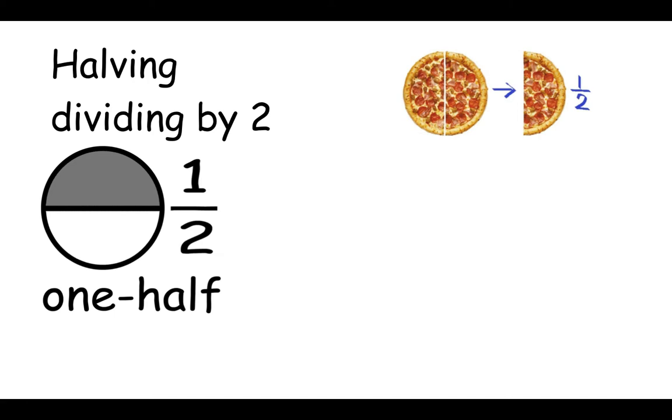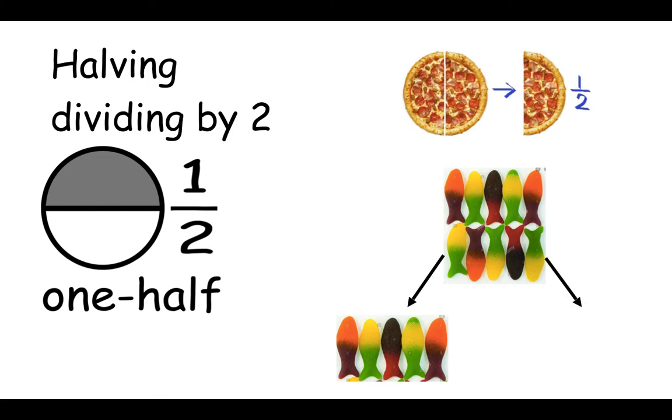We can also halve numbers and amounts. Here on the screen are ten sweets. If I wanted to halve these ten sweets, I would need to divide it by two, or split them into two equal groups. Here is one group of five, and here is another group of five. So I know that half of ten is five. Ten divided by two is five. Or ten split into two equal groups means there are five in each group. So let's remind ourselves. When we're halving, it means we're dividing by two.